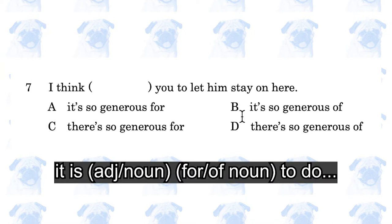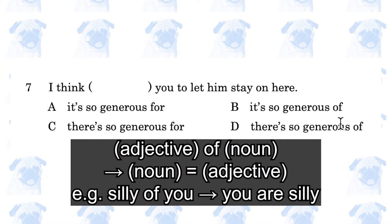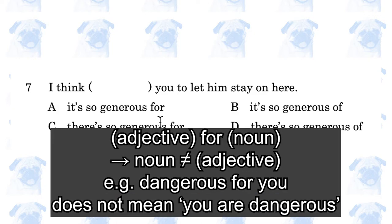This is a special construction involving the dummy subject 'it' and an infinitive clause. In this construction, the subject is indicated by either 'for' or 'of.' The preposition 'of' is used when the adjective is interpreted as a modifier of the subject — so 'it is generous of you' means it is you who are generous. Whereas 'for' cannot be used when the adjective modifies the subject. For example, you can say 'it is dangerous for you to swim here' because it is the act of swimming that is dangerous, not the person.